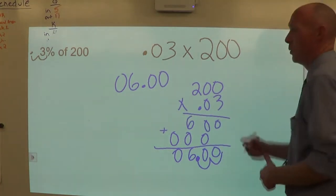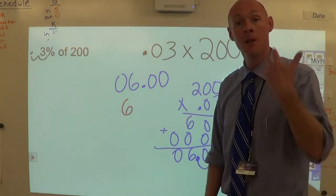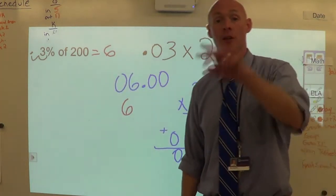And our answer is 0.06, but of course we can just rewrite this as 6. So the answer of what is three percent of 200 is 6. I'll show you two more examples.